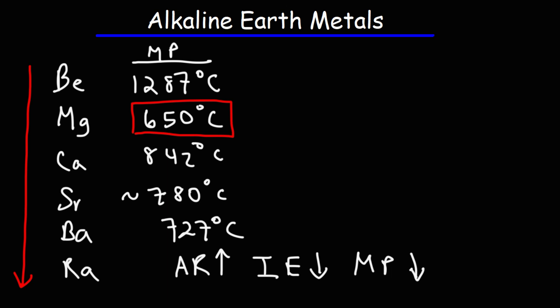Now as you go down the group, the alkaline earth metals become more reactive. The reactivity of these metals increases as you go down the group. So since calcium is below magnesium, calcium is more reactive than magnesium.